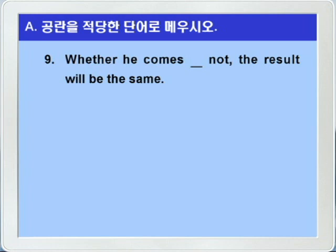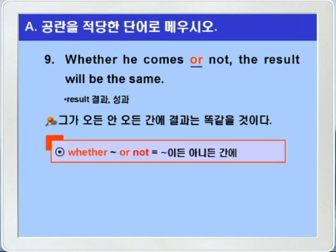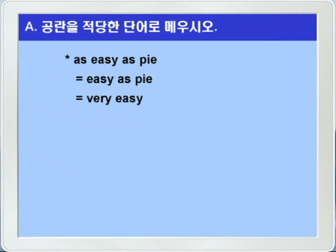9번. Whether he comes blank, not. The result will be the same. 그가 오든 안 오든 간에, 결과는 똑같을 것이다. whether만 봐도 금방 답이 나오죠. or가 정답이 되겠습니다. whether 뭐뭐 or not 하면, 뭐뭐이든 아니든 간에, 이런 뜻이 됩니다. 너무 쉬운 문제였어요. 우리말에 누워서 떡 먹기란 말이 있죠? 영어에서도 as easy as pie, 이런 말을 씁니다. 앞에 as를 생략하고 easy as pie, 이렇게 쓰기도 하죠. 이번 문제는 정말 as easy as pie한 문제였어요.